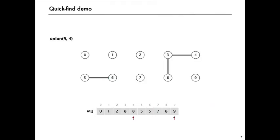What about 9 and 4? To connect 9 and 4, we have to change 9's entry to be the same as 4's. So now we have 3, 4, 8, and 9 all with entries 8—they're all in the same connected component. 2 and 1 means that we connect 2 and 1 by changing the 2 to a 1.